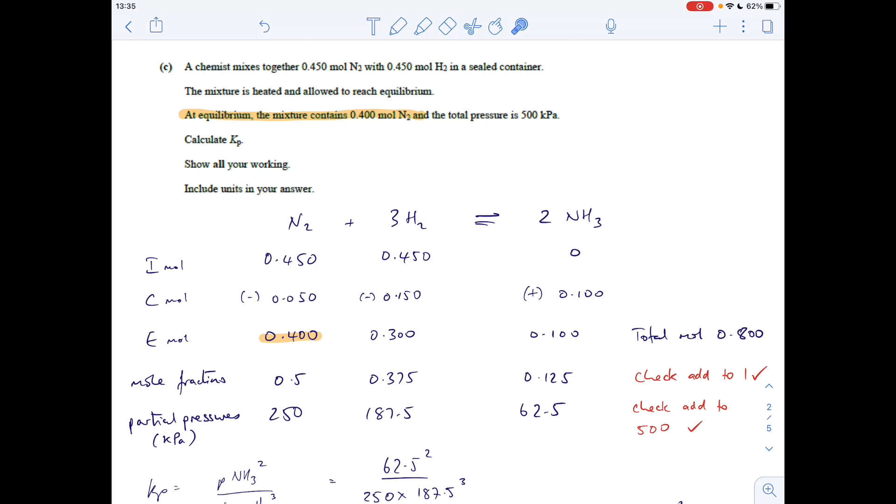Question five is a Kp calculation. We're told the initial moles of nitrogen and hydrogen, and at equilibrium the mixture contains 0.4 moles of nitrogen with a total pressure given. Calculate Kp showing all work and units. I use the ICE method: initial moles, changing moles, equilibrium moles. First, write the initial moles of nitrogen and hydrogen - there's no ammonia at the start. At equilibrium, the mixture contains 0.4 moles of nitrogen. You can see there's been a decrease in nitrogen moles by 0.05.